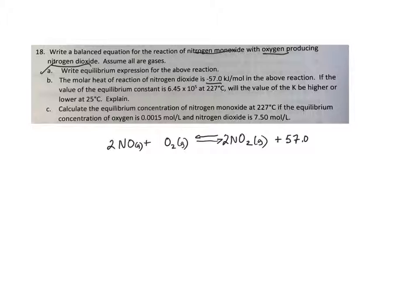So nitrogen monoxide reacts with oxygen to produce nitrogen dioxide, and it produces 57 kilojoules per mole of energy.